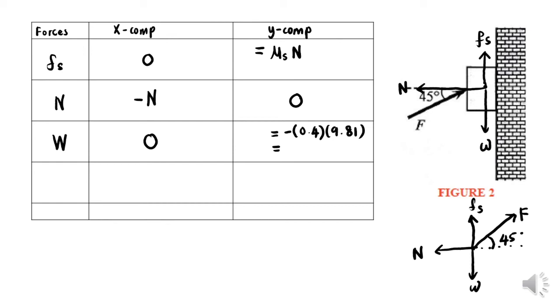The last one is our force that is applied. This force needs to be resolved into x and y components since it's been applied at 45° from the horizontal. Resolve the force and we get F cos 45° for the x component and F sin 45° for the y component.